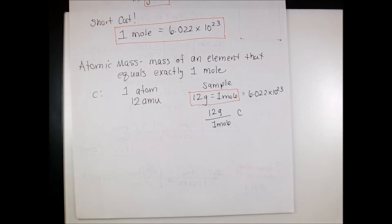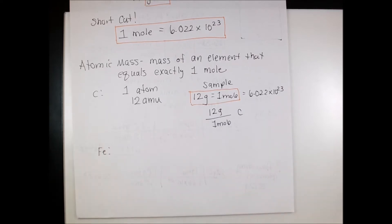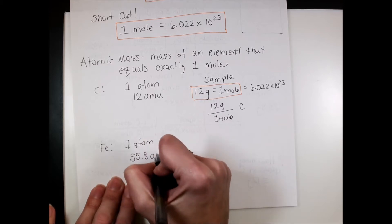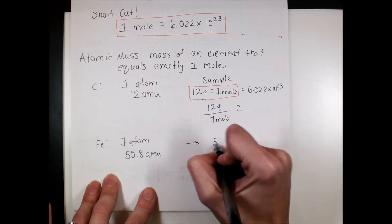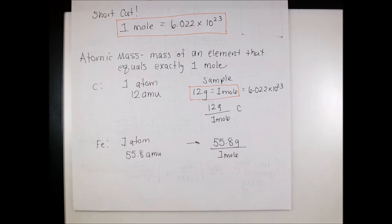The atomic mass is the mass of an element that equals one mole, so everything on the periodic table now has units of grams per mole. For example, iron from the periodic table is 55.8, so one atom of iron is 55.8 AMU, and at the sample scale, 55.8 grams of iron equals one mole.